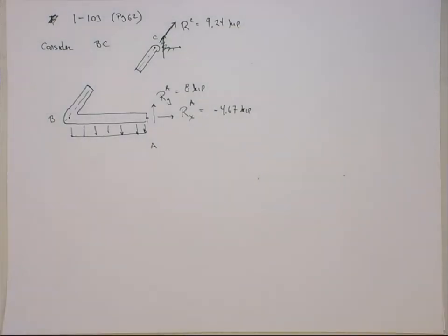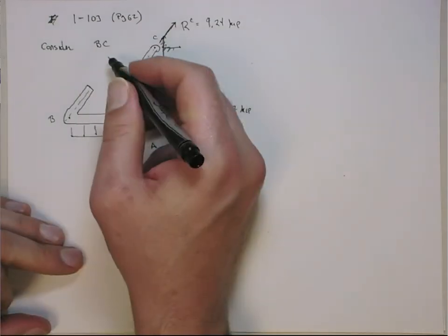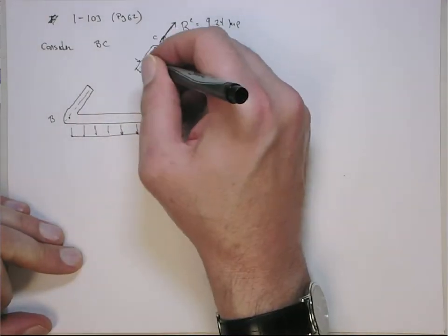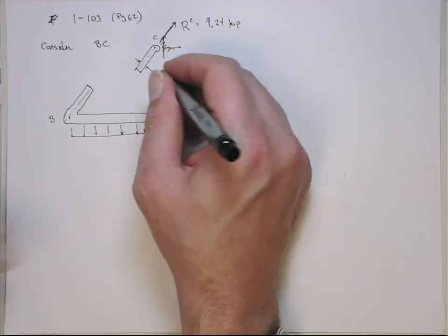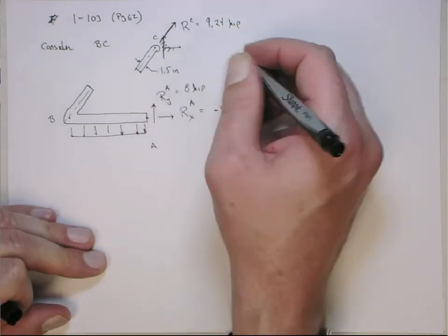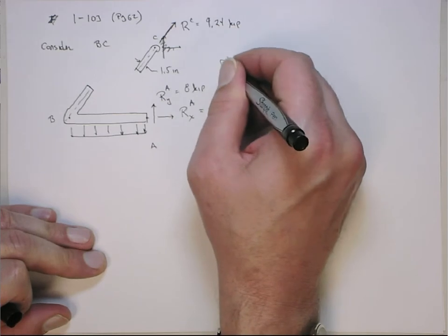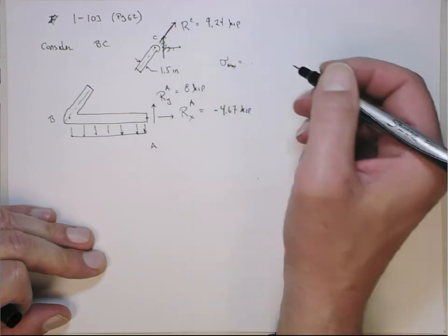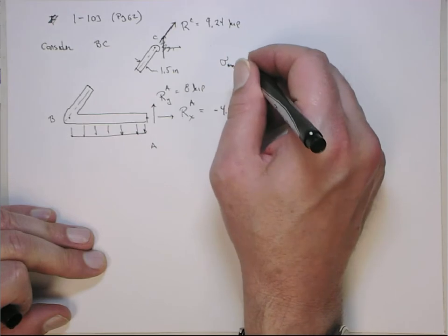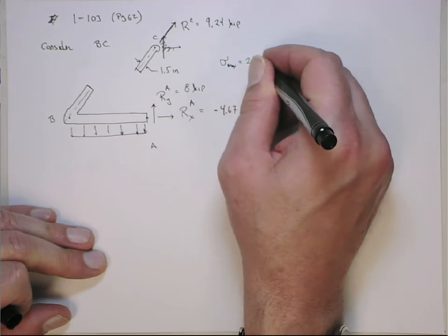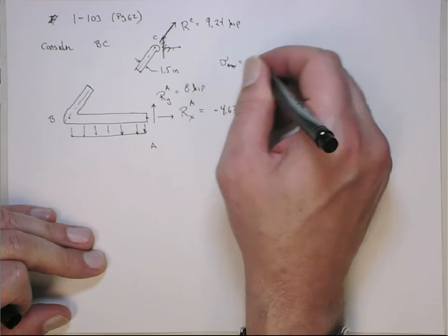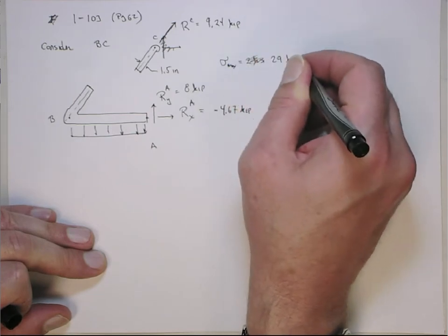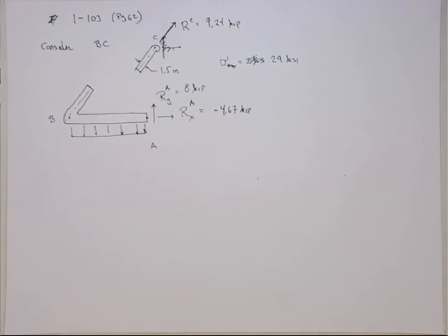All right. So first, let's look at sizing BC. So I know in BC this dimension here is given at 1.5 inches. And I also know the maximum allowable stress in element BC is 29 ksi. So that's the maximum allowable average normal stress.